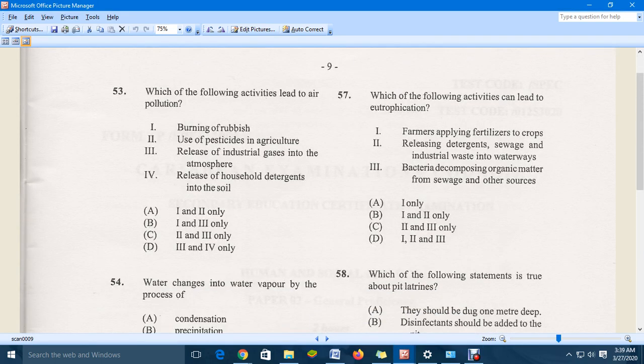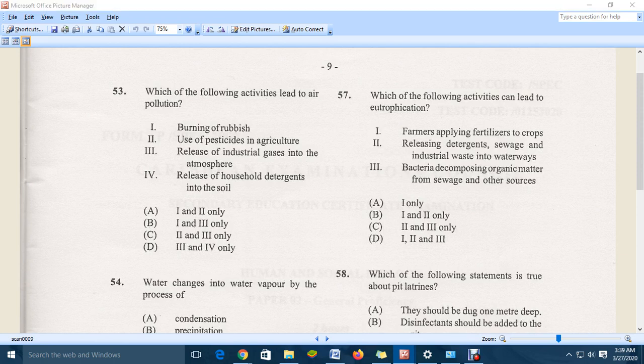Let's move to question 53. Which of the following activities lead to what is called air pollution? We have burning of rubbish, use of pesticide in agriculture, release of industrial gases in the atmosphere, release of ozone detergent into the soil.